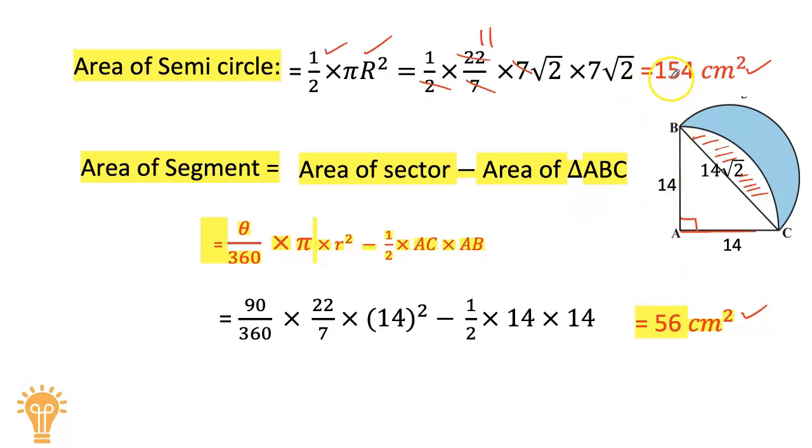Now our task is to find the area of the shaded portion. That is area of semicircle minus area of segment: 154 minus 56 equals 98 cm².